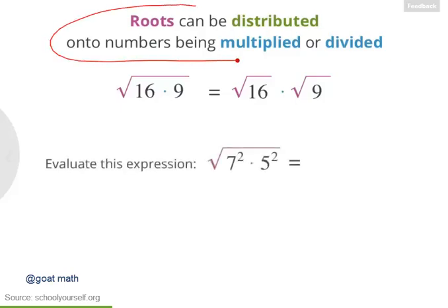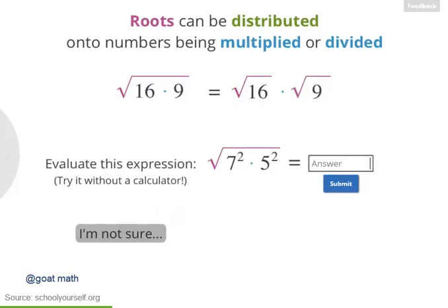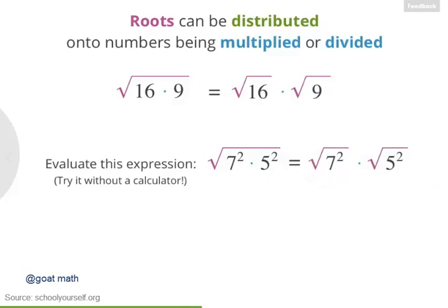So next, try applying this rule to evaluate the square root of 7 squared times 5 squared. See if you can figure this out without using a calculator. First, you distributed the roots onto 7 squared and 5 squared, and then cancelled out the squares and square roots. That left you with 7 times 5, or 35 — the correct answer.